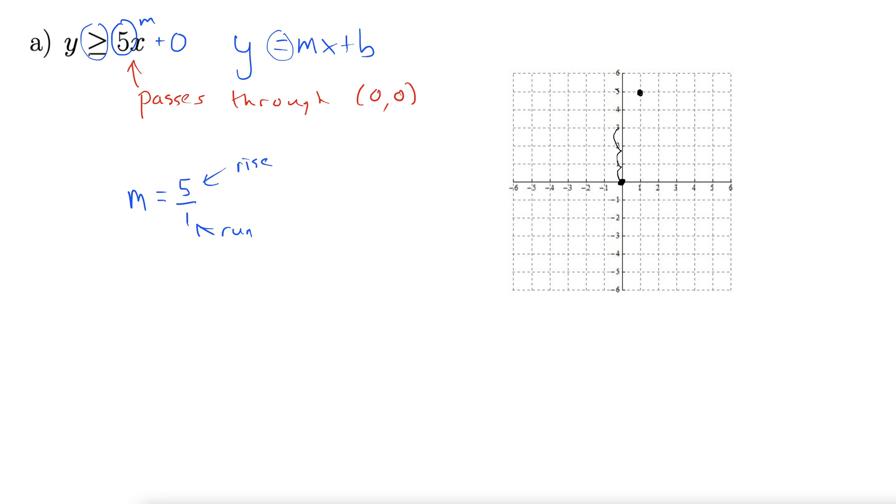And then since this is greater than or equal to, this equal to means we do a solid line instead of a dashed line. Well, there's a line.